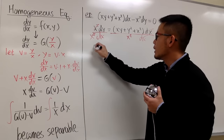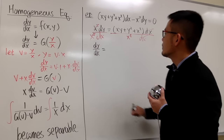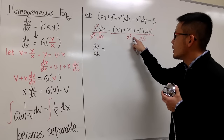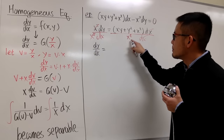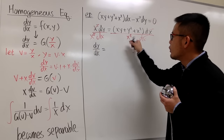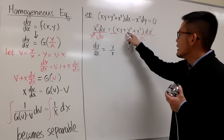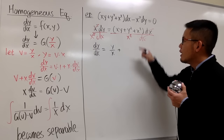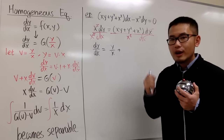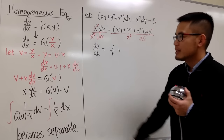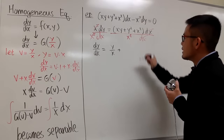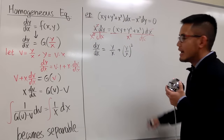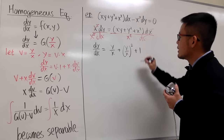Simplifying carefully: xy over x² gives y/x since one x cancels. Then y² over x² I'll write as (y/x)², because I want everything in that form. And x² over x² is just 1. So dy/dx equals y/x plus (y/x)² plus 1.